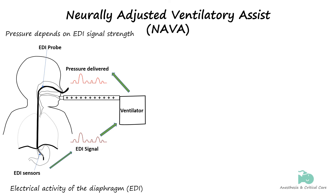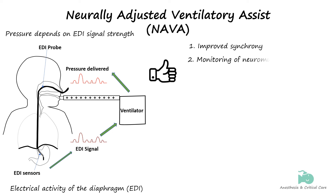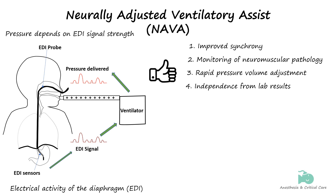Some of the advantages highlighted by the manufacturer include improved synchrony, as NAVA does not depend on pressure and flow which are affected by circuit leaks and patient-ventilator asynchrony. Other proposed advantages include the capability to monitor conditions such as Guillain-Barré syndrome and myasthenia gravis, rapid adjustment of pressure and volume, independence from blood gas and other biochemical analyses, and a lower pressure requirement compared to conventional triggering methods.